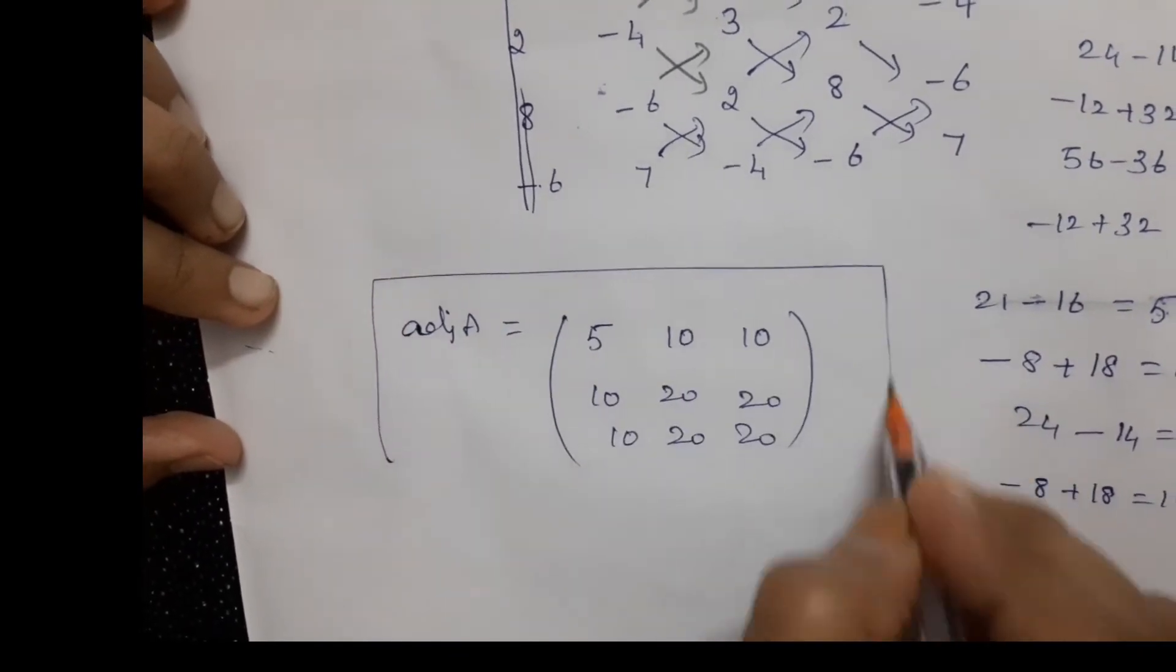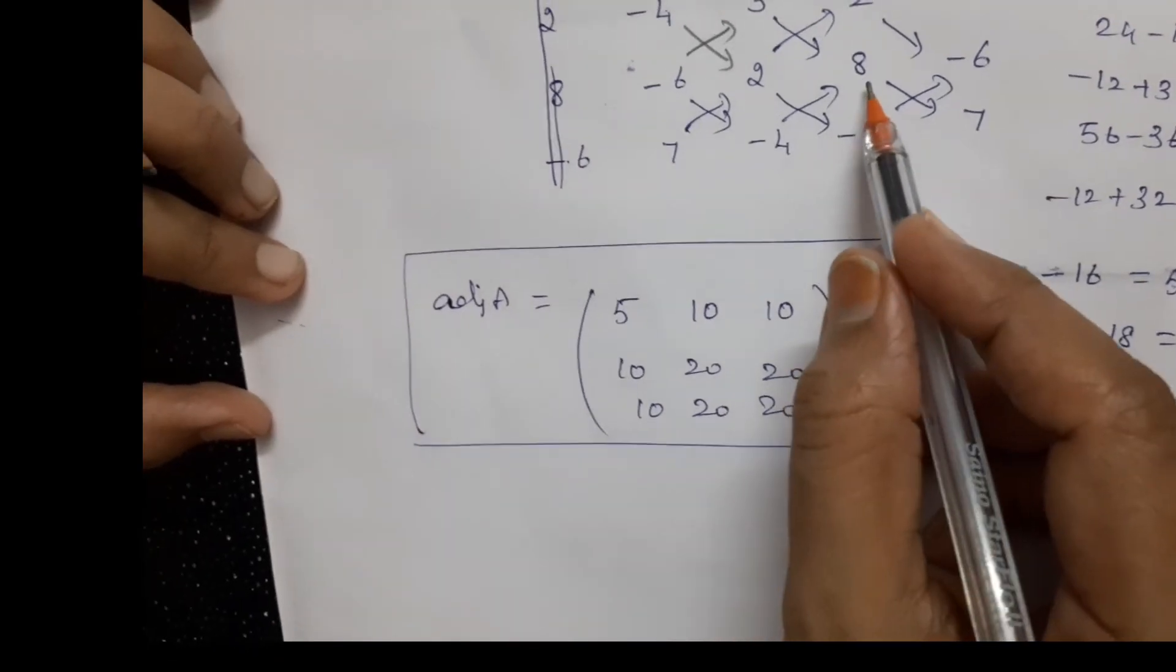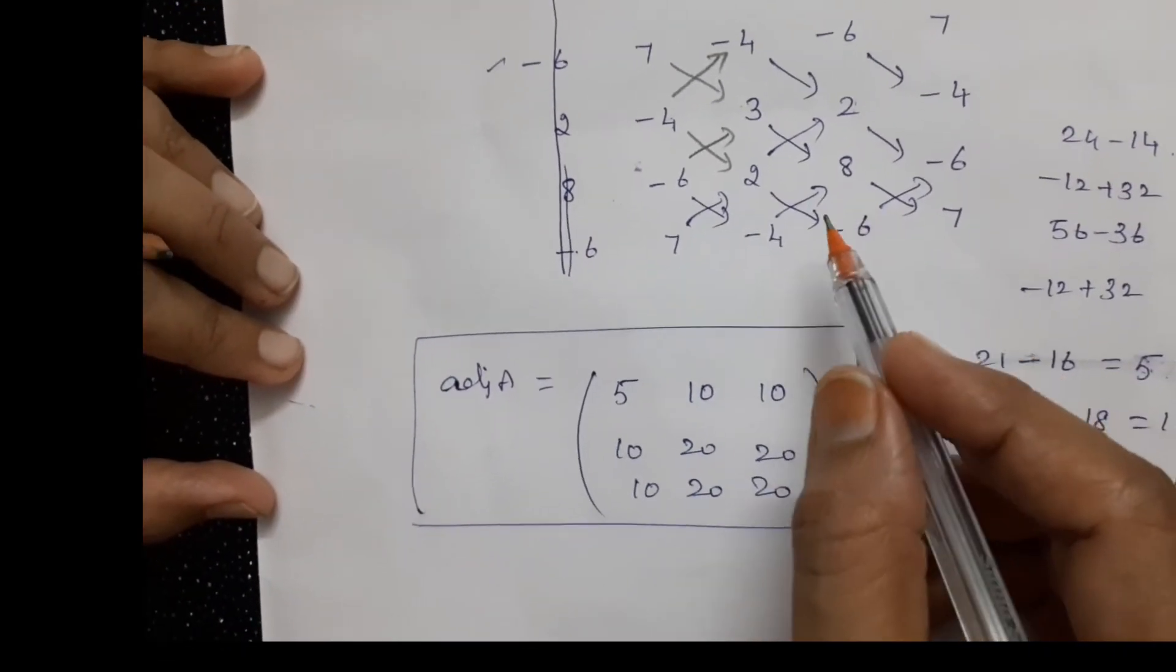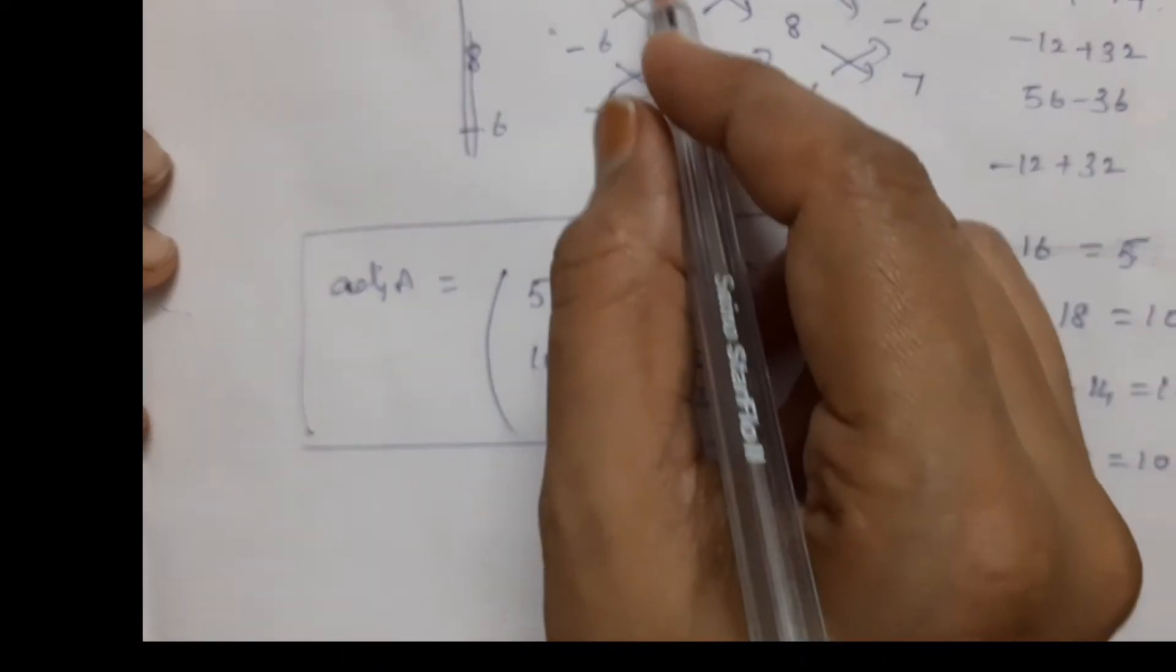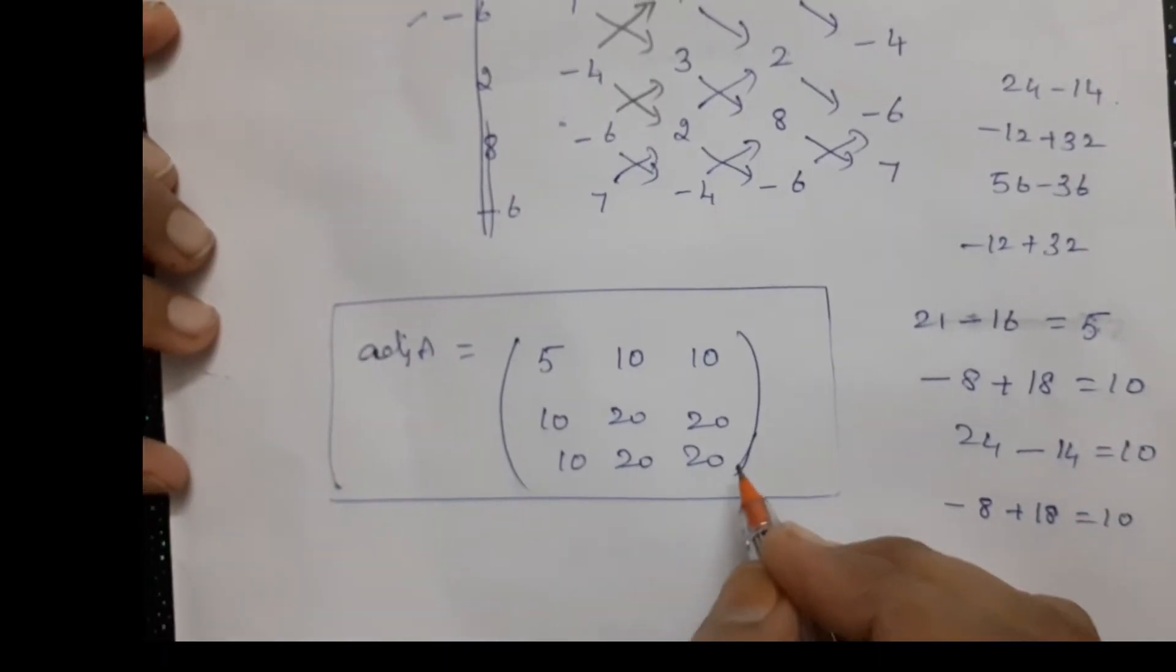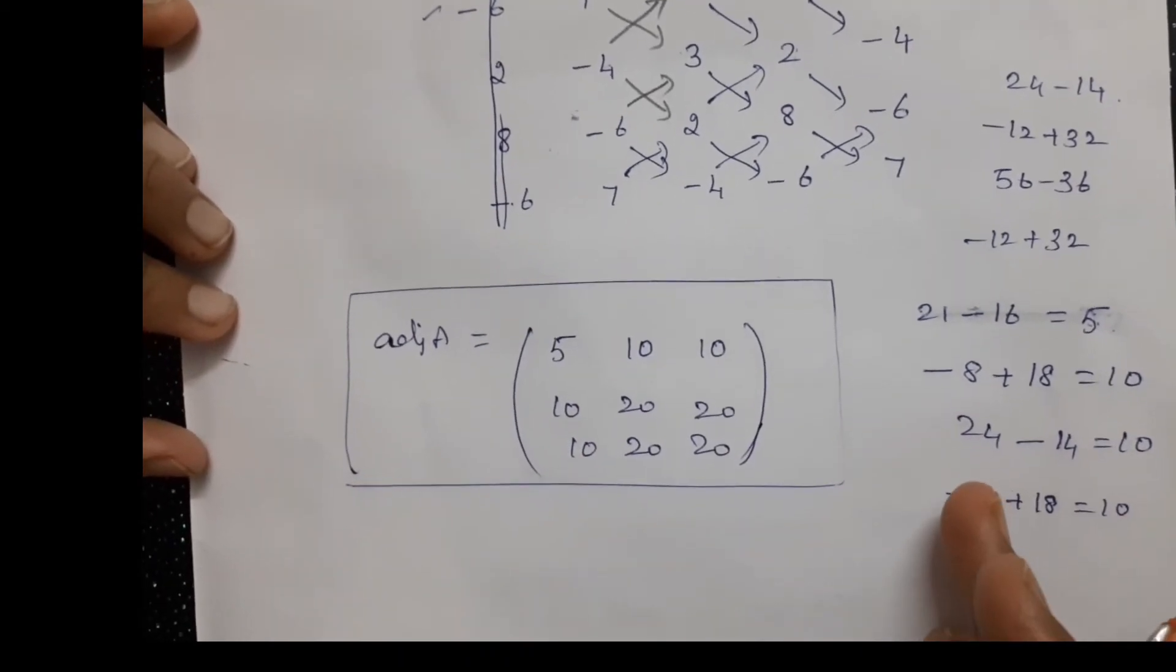So now this is our adjoint A. This is the shortcut method. You can follow this method to find the adjoint of a given matrix. Here there's no need to take the transpose—we've already written the transpose. So this is our adjoint A. That's all.